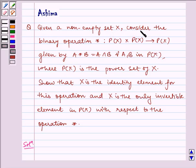Given a non-empty set X, consider the binary operation star from P(X) × P(X) → P(X) given by A * B = A ∩ B for all A, B in P(X), where P(X) is the power set of X. Show that X is the identity element for this operation and X is the only invertible element in P(X) with respect to the operation star.